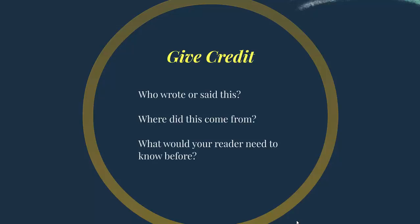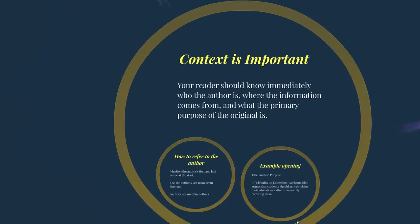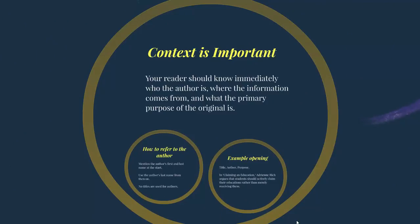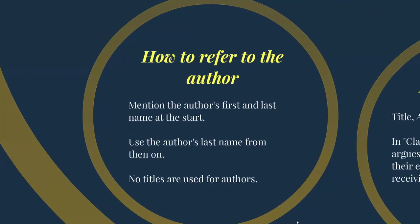Think about where this information is coming from — the publication it comes from, the ideology of the person creating it. For example, if you're summarizing something political in nature, you'd want to pay attention to what political party this person ascribes to, and what the person's job is if they are a professional in the field. Also think about what your reader would need to know before reading your summary — for instance, if you're summarizing something highly technical, are there pieces of information your reader would need to fully understand what you're summarizing?